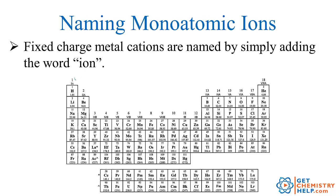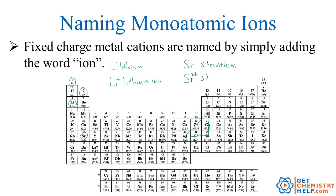For metals that make cations with fixed charges — group 1, group 2, and the magic triangle — all you do is add the word "ion." You don't need to change the ending or anything else. So lithium becomes lithium ion when it becomes lithium positive. Strontium becomes 2 positive and we just call it strontium ion. The same applies to zinc ion, aluminum ion, cadmium ion, and so on.